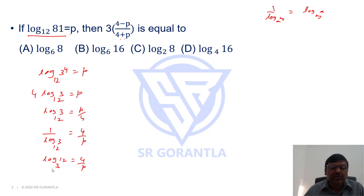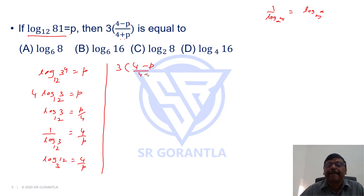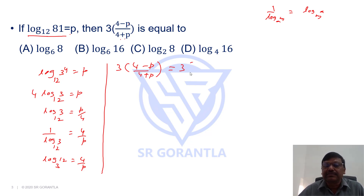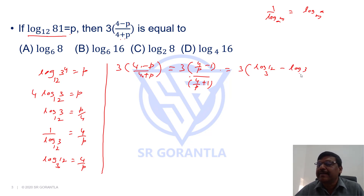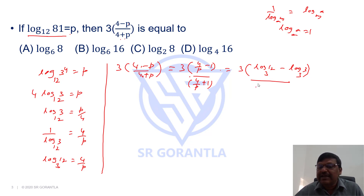Our expression is 3 into (4 minus p) by (4 plus p). Dividing numerator and denominator by p gives 3 into (4/p minus 1) by (4/p plus 1). Substituting 4/p equals log 12 base 3, the numerator becomes log 12 base 3 minus 1, which we write as log 12 base 3 minus log 3 base 3, since log a base a equals 1. Similarly the denominator becomes log 12 base 3 plus log 3 base 3.